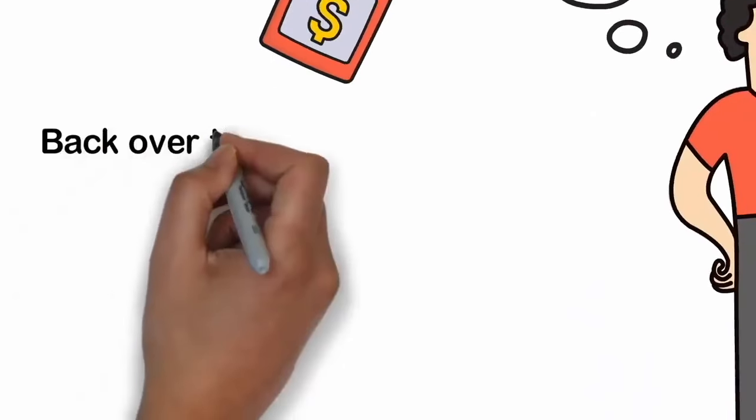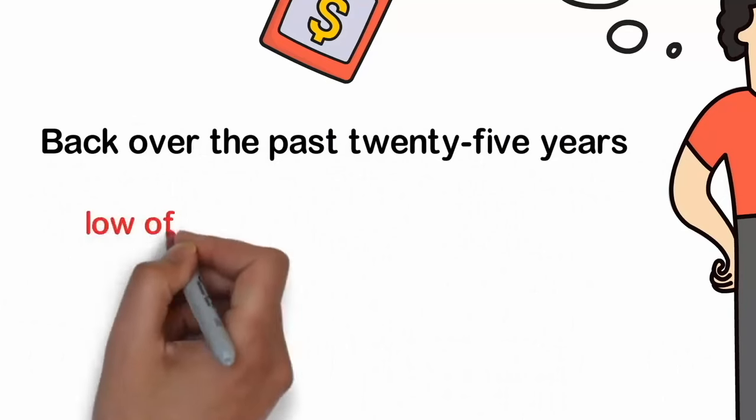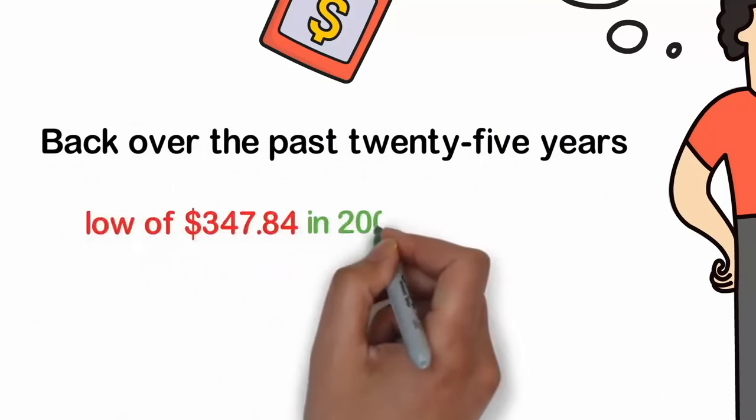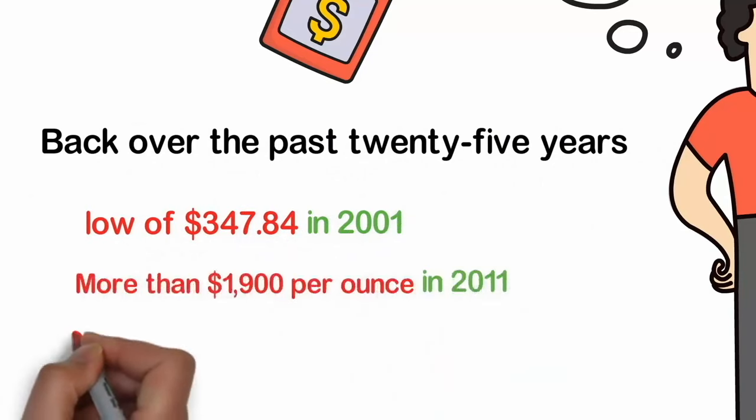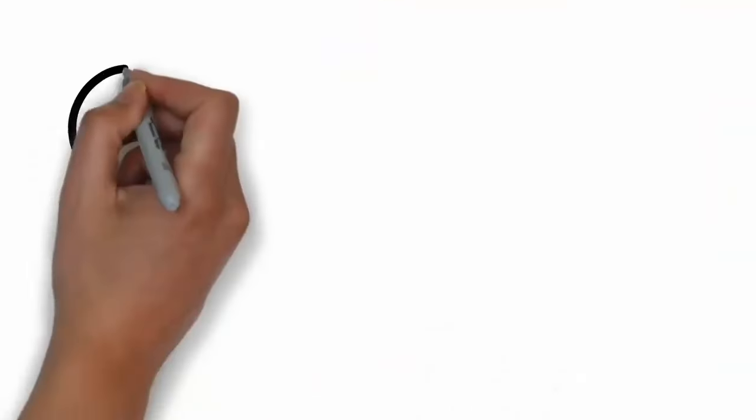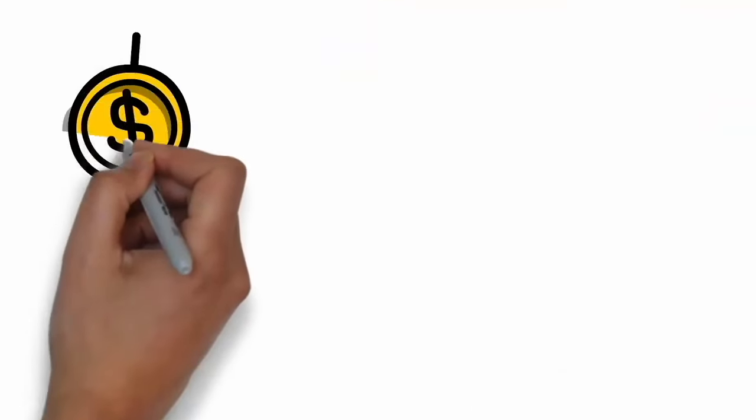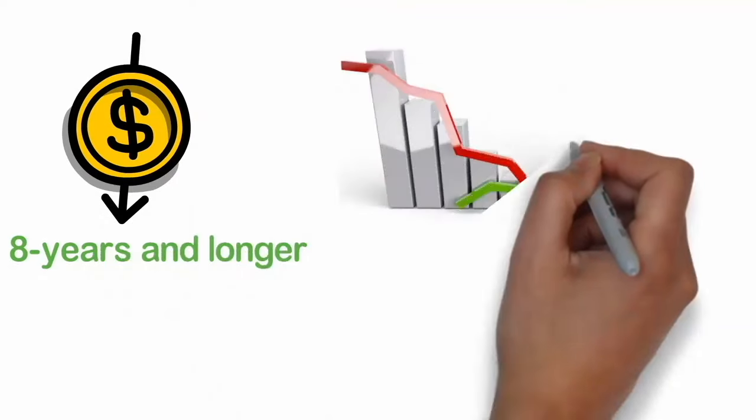Looking back over the past 25 years, the price of gold has ranged from a low of $347.84 in 2001 to more than $1,900 per ounce in 2011. Today, it's selling for over $2,000 per ounce. In fact, for a range of investment holding periods of 8 years and longer, the NASDAQ index has significantly outperformed gold.